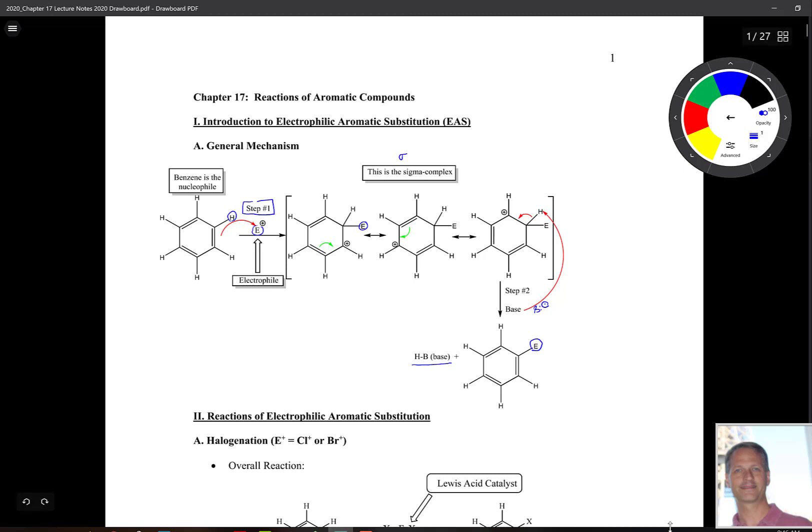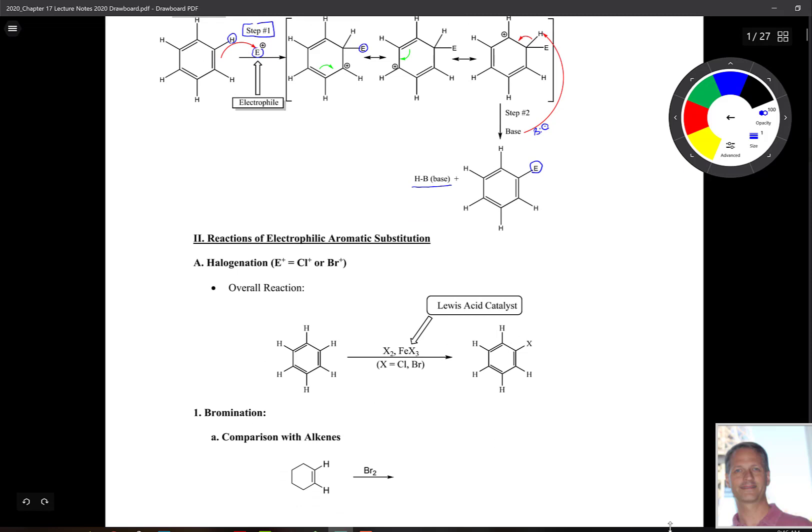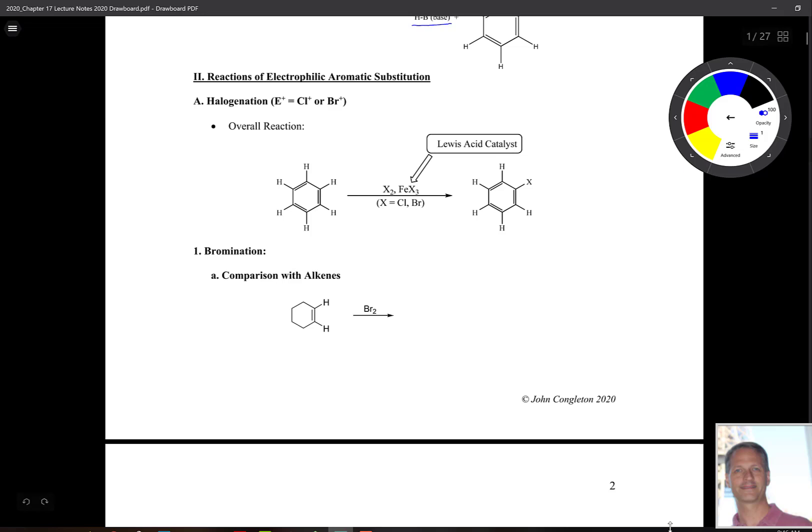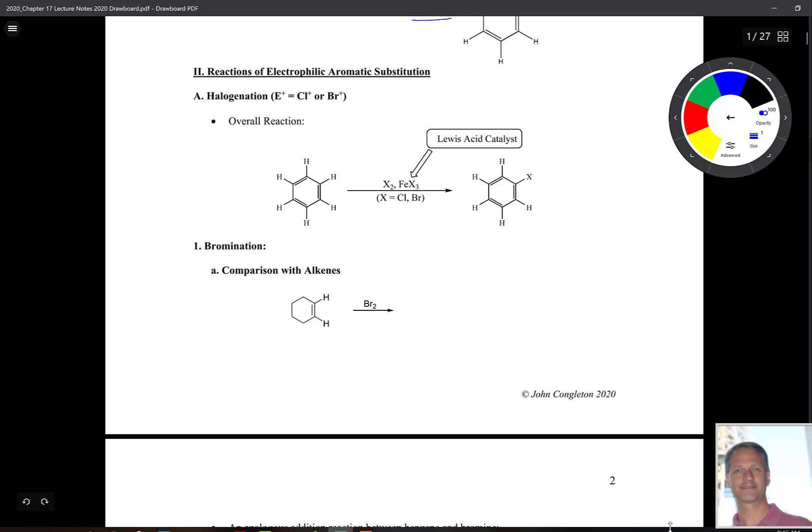Let's take a look at some of the reactions. The first one we're going to look at is called halogenation. The observed reaction for this has benzene as our nucleophile, and then some type of halogen, usually bromine or chlorine, and to this we have to have a catalyst. We'll see how that catalyst helps facilitate this reaction as we go through the mechanism. In the end, an H atom is substituted with an X.